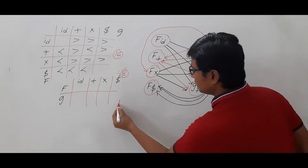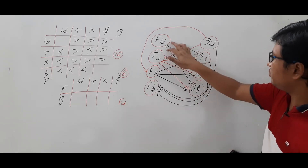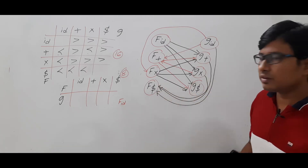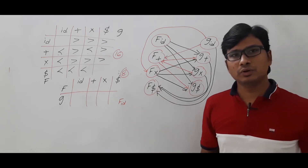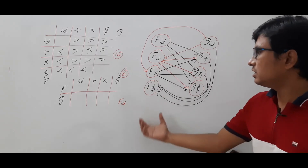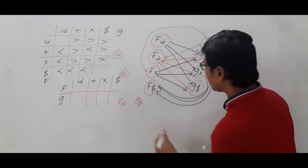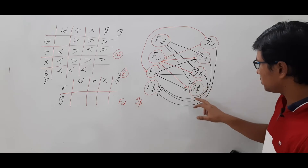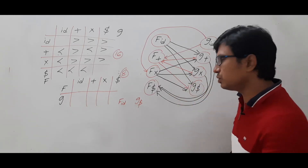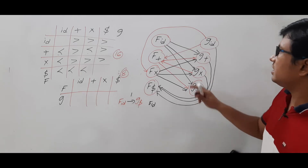To compute the value at f(id), we find the longest path starting from f(id). From f(id) you can go to g(plus), from g(plus) you can go to f(dollar). From f(id) you can go to g(star), from g(star) you can go to f(dollar). From f(id) you can also go to g(dollar), but from g(dollar) you cannot go anywhere — so that path has length 1.